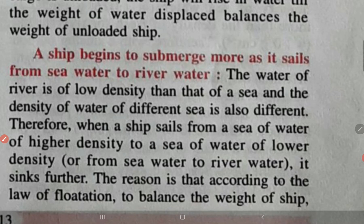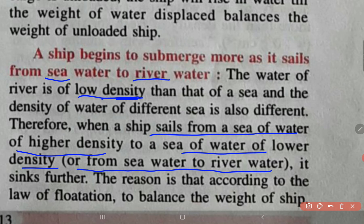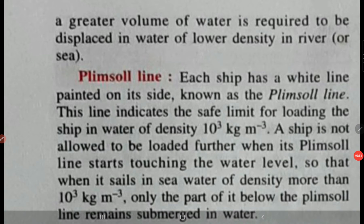A ship begins to submerge more as it sails from sea water to river water. Sea water will give more upthrust than river water. The reason is density — river water is of lower density than sea water, and the density of water in different seas is also different. Therefore, when a ship sails from a sea of higher density to one of lower density, there will be a change in the upthrust. According to the law of flotation, to balance the weight of the ship, a greater volume of water is required to be displaced in water of lower density.